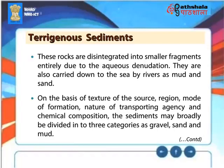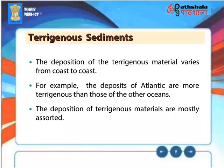These rocks are disintegrated into smaller fragments due to aqueous denudation and are carried down to the sea by rivers as mud and sand. On the basis of texture of the source region, mode of formation, nature of transporting agency, and chemical composition, the sediments may broadly be divided into three categories: gravel, sand, and mud. The deposition of pterigenous material varies from coast to coast. For example, the deposits of the Atlantic are more pterigenous than those of other oceans, and the deposition of pterigenous materials is mostly assorted.